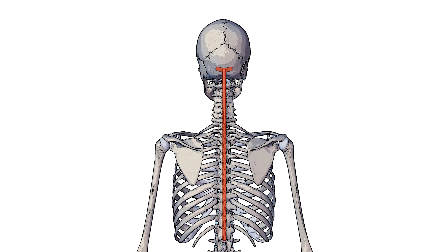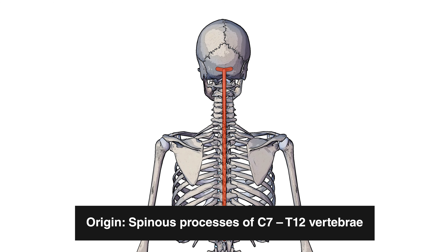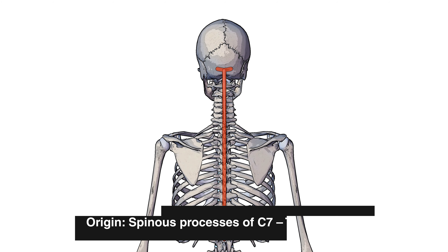Marked out here in red is the origin of the trapezius muscle. Let's look at the vertebral part first. We've got C7 all the way down to T12 on the vertebrae, and on the posterior of each of these vertebrae there's a little nodule that sticks out on the back — that's the spinous processes. So the trapezius specifically originates on the spinous processes of C7 to T12 vertebrae.